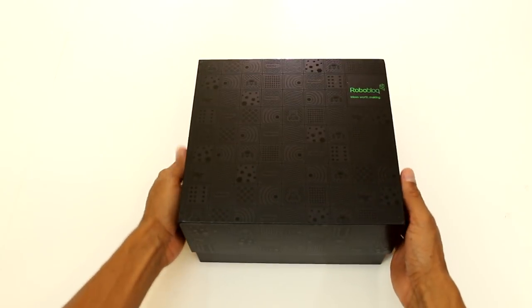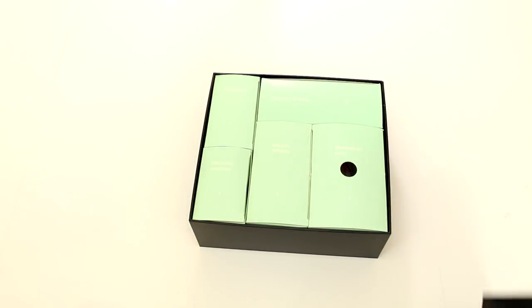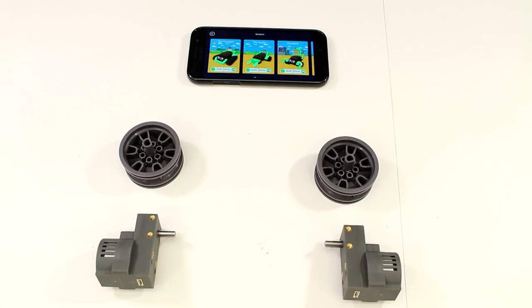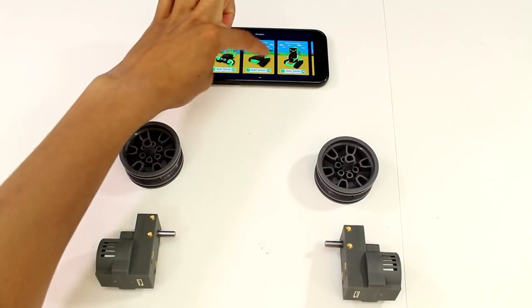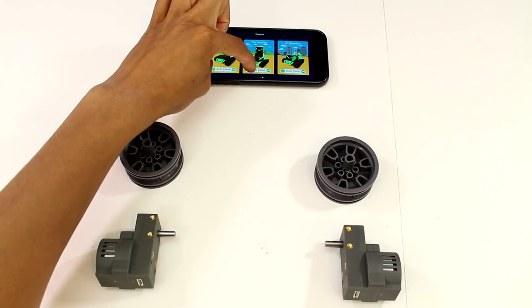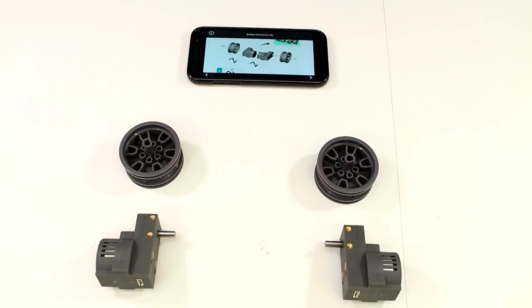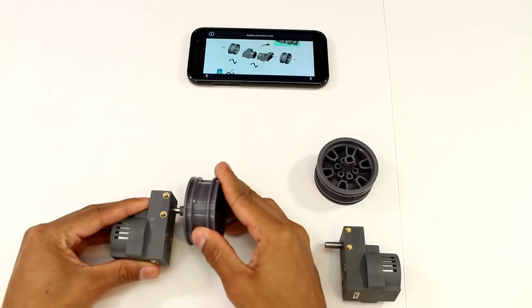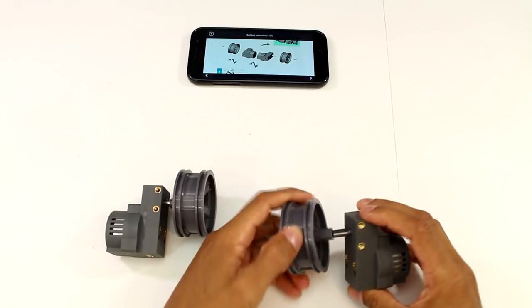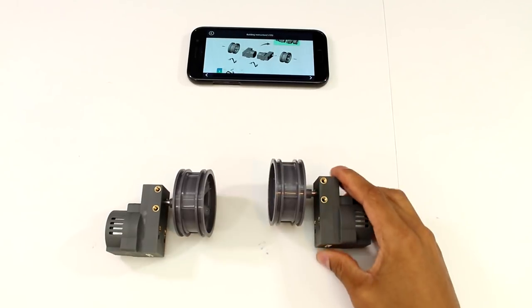To build the robot part of the robot, I use a kit called Roboblock. Now the kit has a nice app that comes with it. So I download the app and I choose the type of robot that I want to build. From here, all we have to do is just follow the instructions. I'm not going to show all of this, but I do want to talk about a couple things.